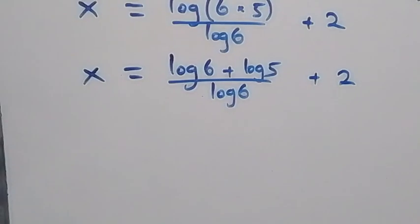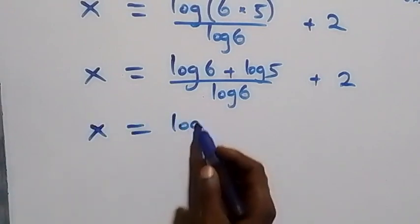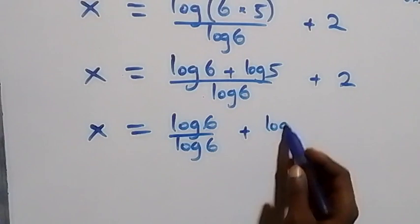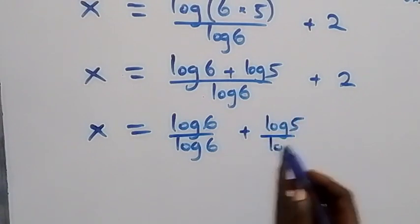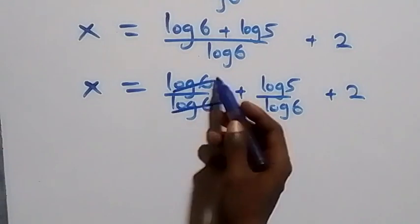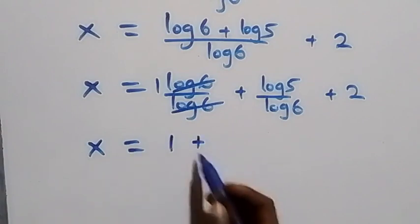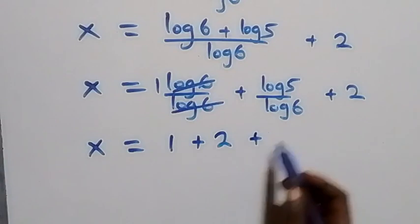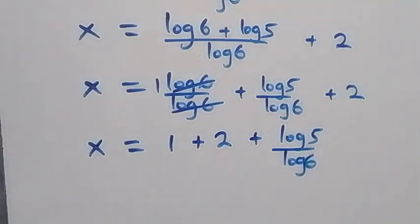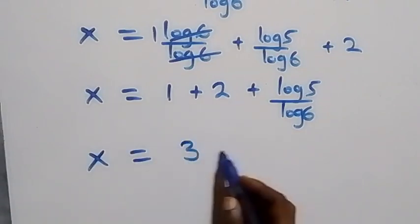We separate this into two fractions: x equals log 6 over log 6, plus log 5 over log 6, then plus 2. Here log 6 cancels each other, leaving 1. So this becomes x equals 1 plus 2, plus log 5 over log 6, that is x equals 3 plus log 5 over log 6.